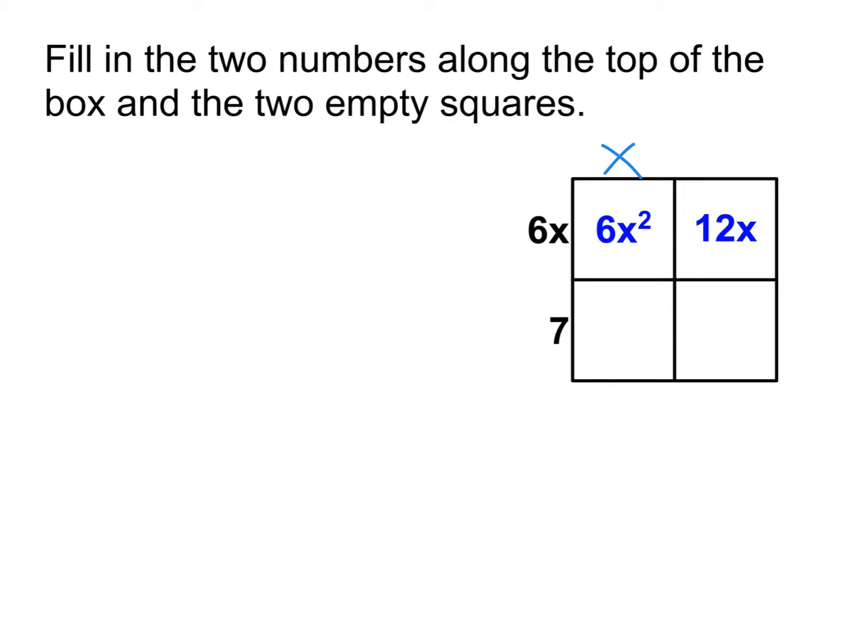In order to get the number that goes up here, I can say, okay, the 12x - 6x times what is 12x? 2. So then I filled in the top. Having done that, I can now fill in the two boxes along the bottom. So x times 7 gives me 7x, and 2 times 7 gives me 14. So there we can see how we can kind of put it together with parts of that information.